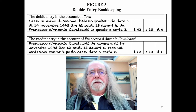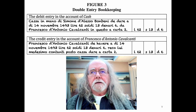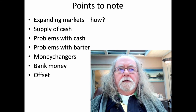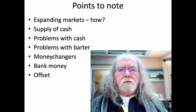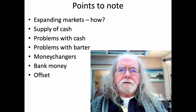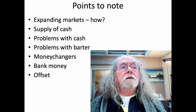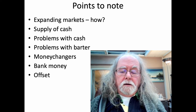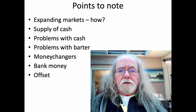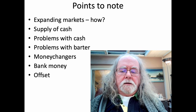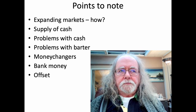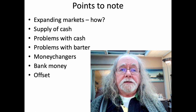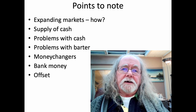We know that markets started to expand in the 11th century, growing much wider and in terms of amounts involved. But historians were puzzled as to how that was possible, because there was a shortage of supply of cash across all of Europe throughout medieval times — in fact, up to 1900 there was a shortage of cash. If you've got a shortage of cash, how did you trade?